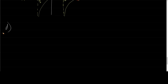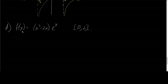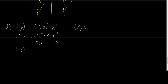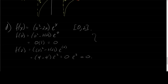Example D: f of x equals (x squared minus 2x) times e to the x, on the interval from 0 to 2. Let's check the endpoints first. F of 0: (0 squared minus 2 times 0) times e to the 0 equals 0 times 1, equals 0. F of 2: (4 minus 4) times e squared equals 0 times e squared, equals 0. The endpoints are the same — f of 0 equals f of 2.